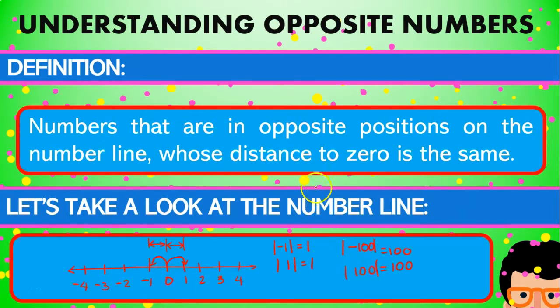So we're going to take a look at what it says when understanding the concept or the definition of opposite numbers. So they're in opposite positions whose distance to zero is the same. So we have exactly the same thing. Whenever we have a number like 3 and we see the distance from zero, we know that the distance is going to be of 3 steps.